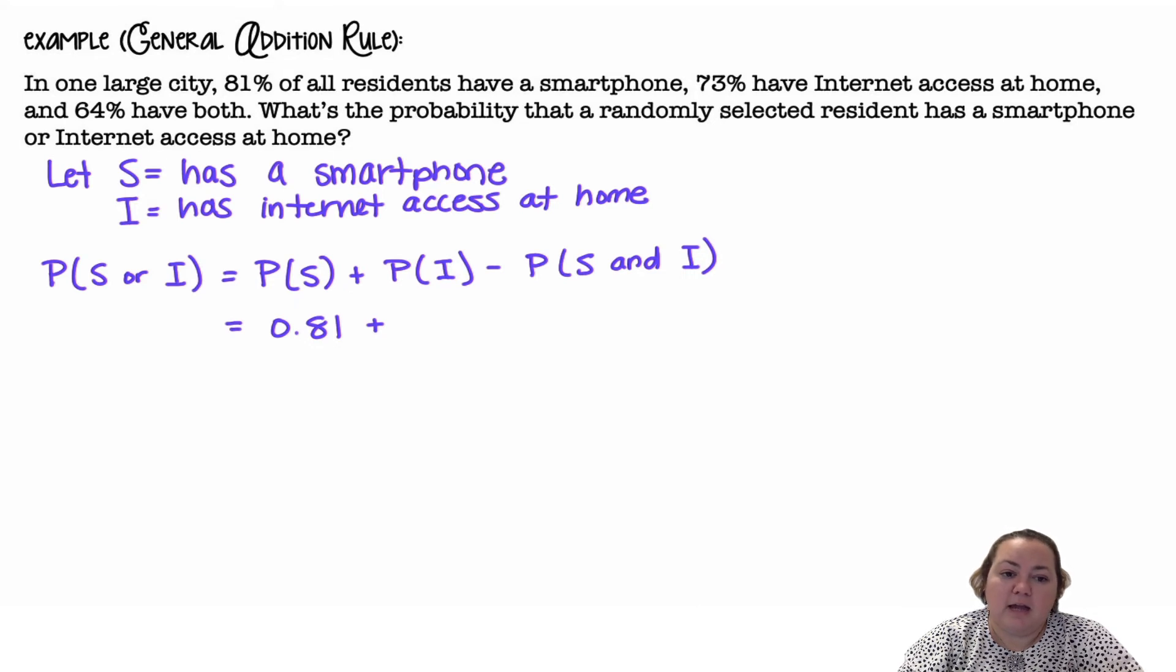Right now it's counted in the 81% that have smartphones, and it's counted in the 73% that have internet access, so I don't want it to count twice. So I'm going to subtract it one time, and I get 90%. So 90% either have a smartphone or internet at home or both.